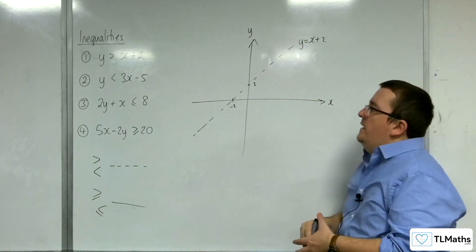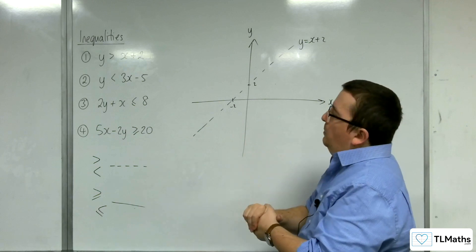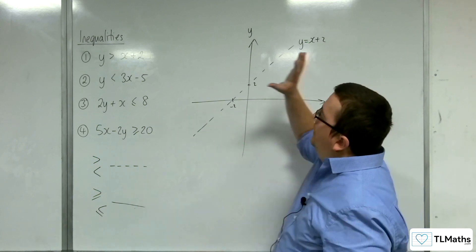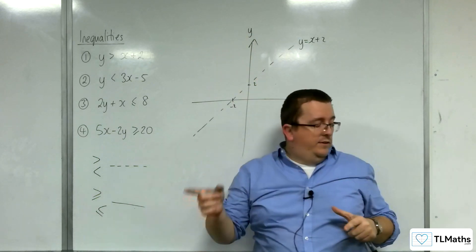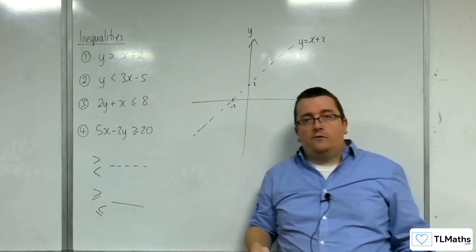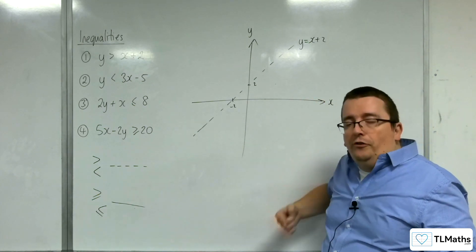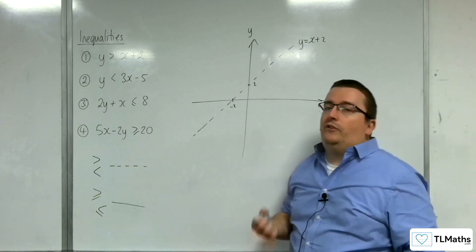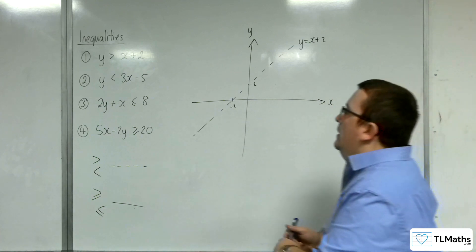And so, this is where the school of thought comes in. If you wanted y is greater than x plus 2, you then need to identify which half you're looking at, either top half or the bottom half. The way to determine which half you're looking for, an easy way, is to choose a point that is not on the line and substitute it in. If your inequality still holds, then that is the region you want.